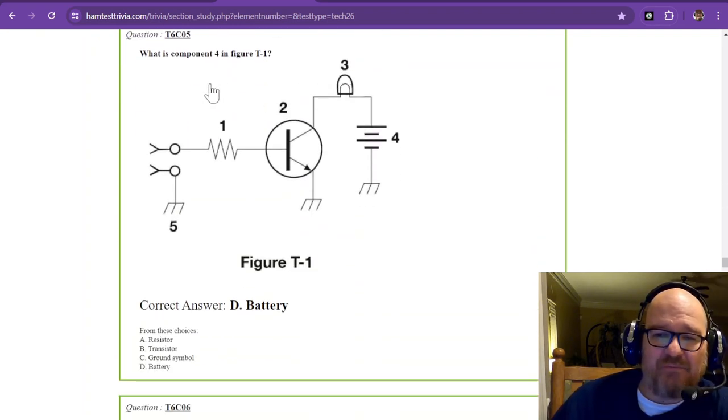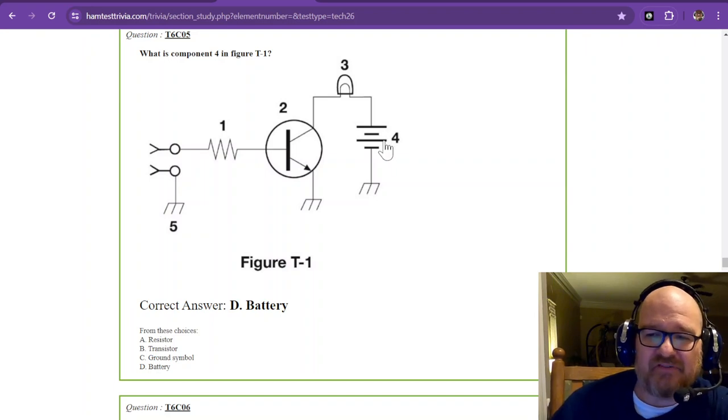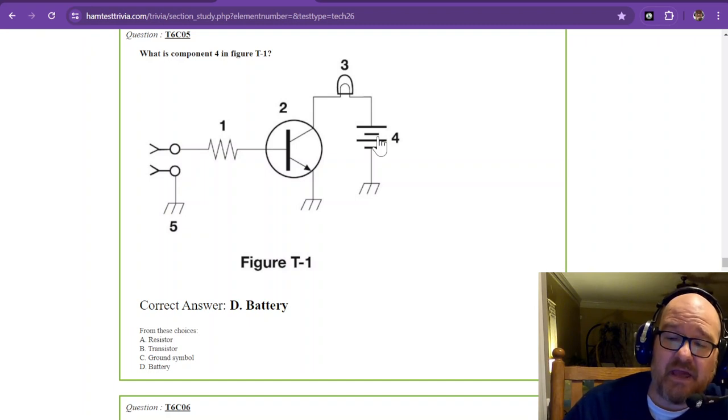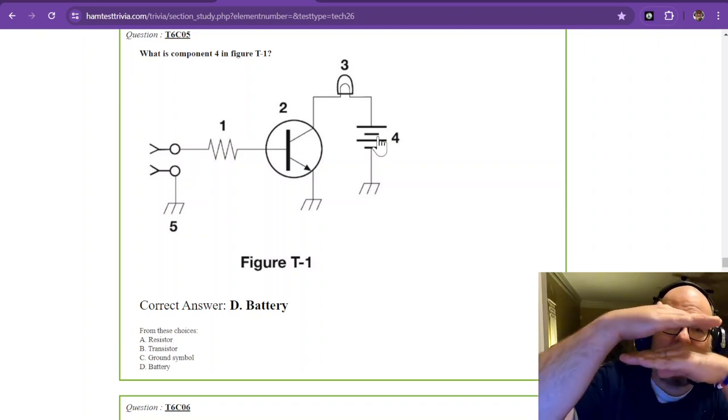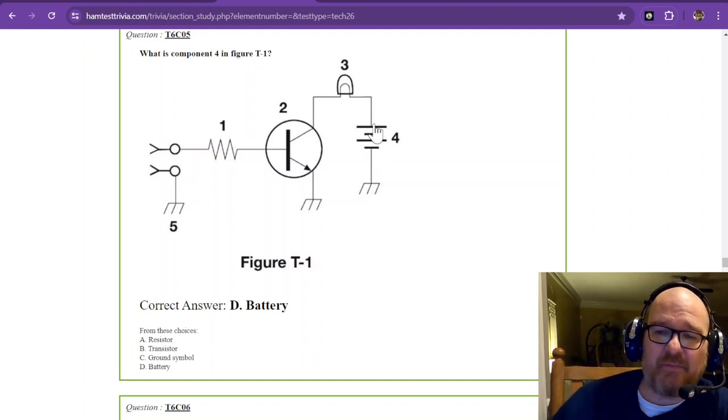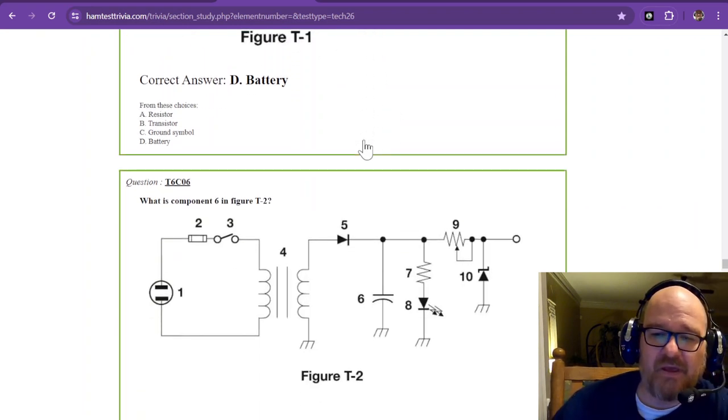Question 5. What is component 4 in figure T1? And this is a battery. Now, I don't think they do this on the test, but the battery can be confused with, can you guess, a capacitor. A regular old capacitor has two parallel plates, but they're the same size. In a battery, you have the positive and then the negative. The positive is the long one. Negative is the short one. So this is your battery.